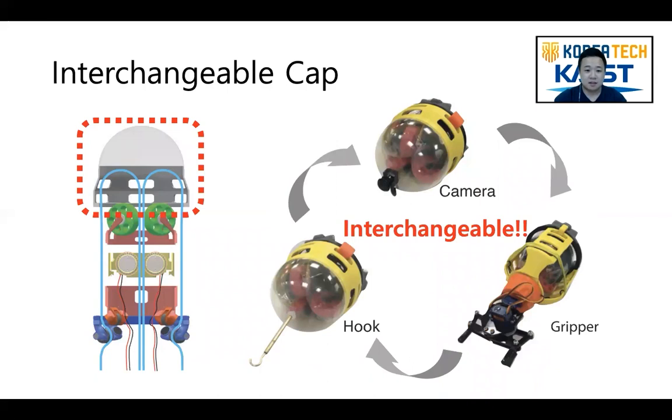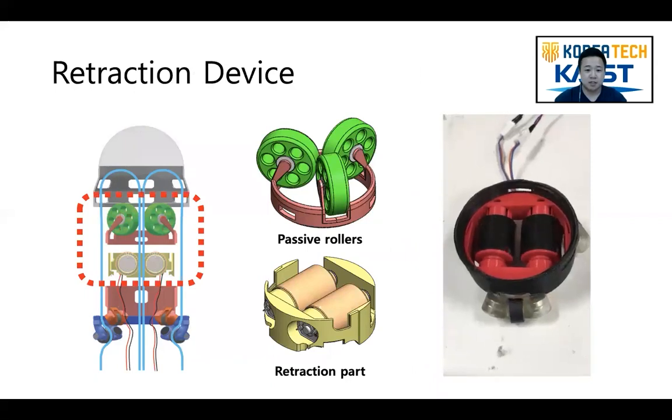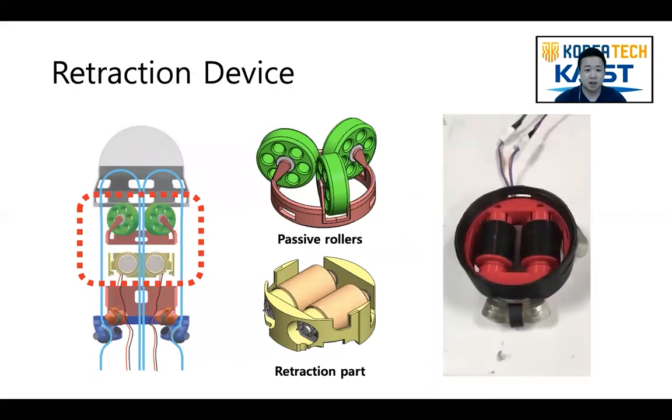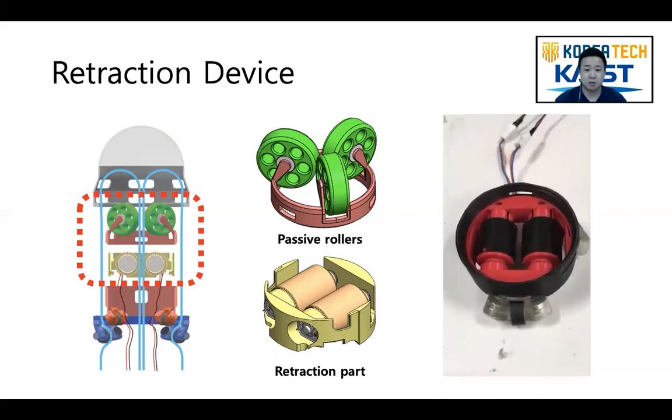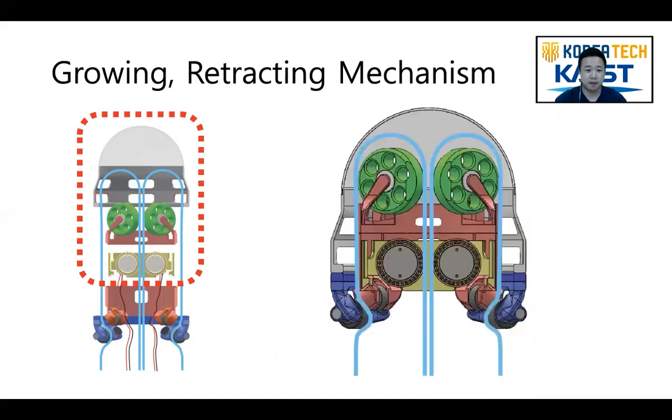First, the interchangeable cap remains at the robot tip during growth as it is pushed by the growing force of the robot. In addition, it can be replaced with a camera, hook, or gripper depending on the situation. The second main component is the retraction device consisting of two active rollers covered by high friction material which contact the robot tail, and three passive rollers on top of it. In growing situations, the active rollers push the robot material forward to support growing.